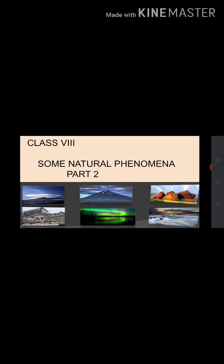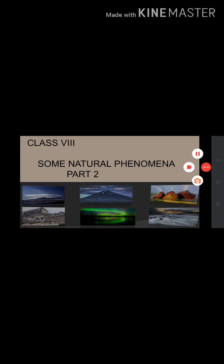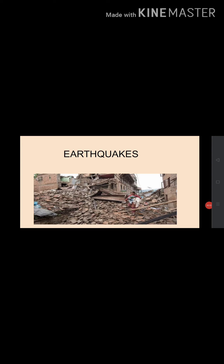There is however one natural phenomenon which we are not able to predict — that is an earthquake. It can cause damage to human life and property on a huge scale. A major earthquake occurred on 26th January 2001 in Kutch district of Gujarat. Now let's learn more about earthquakes through this chapter.